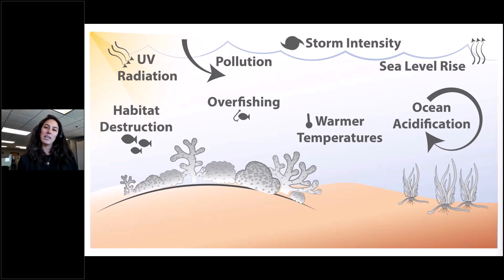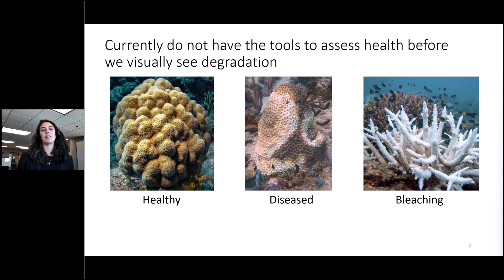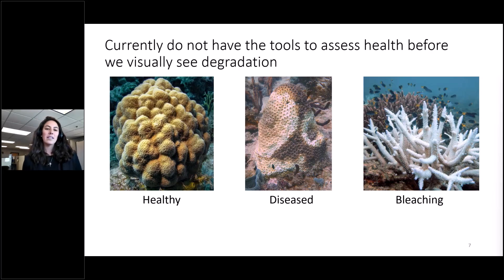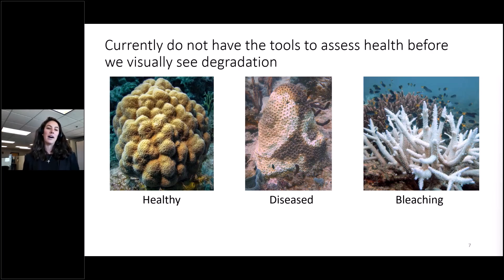When looking at corals, the best that we can do to assess their health is to visually look at them. A healthy coral, such as that pictured on the left, is pigmented and rich in color. When it becomes unhealthy, such as those on the right, we can see that they are white in color and show signs of disease and bleaching. However, by the time we can see these visual changes, it is too late to help the corals. So we want to understand how we can better predict the health of coral.